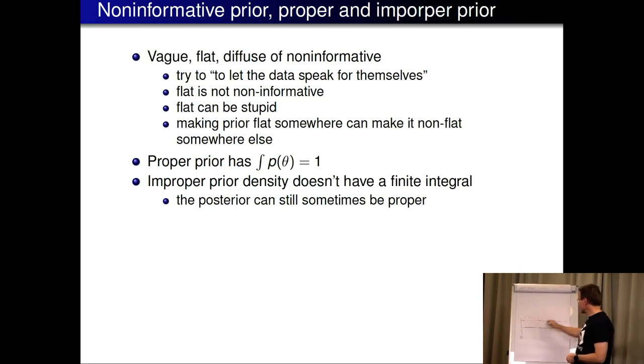The proper prior has to also integrate to one. Uniform prior, if it's on the real axis or half real axis, it's not proper. That can also cause problems. So we favor proper priors. Improper prior doesn't have a finite integral. So the posterior can still sometimes be proper, but it's your responsibility to check it. So it's better to use proper priors.